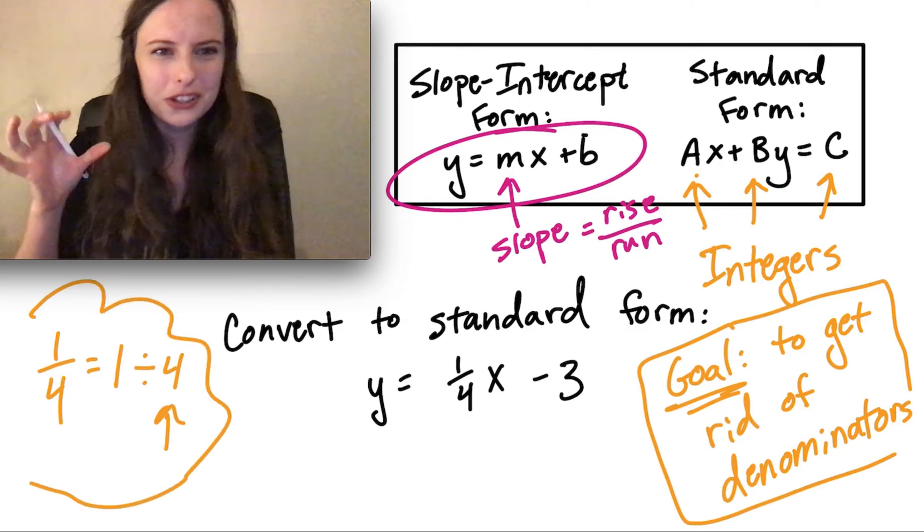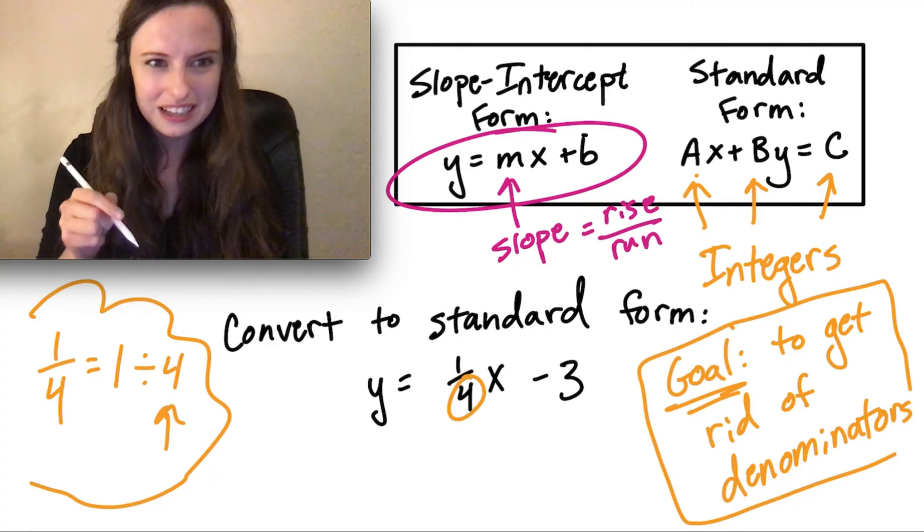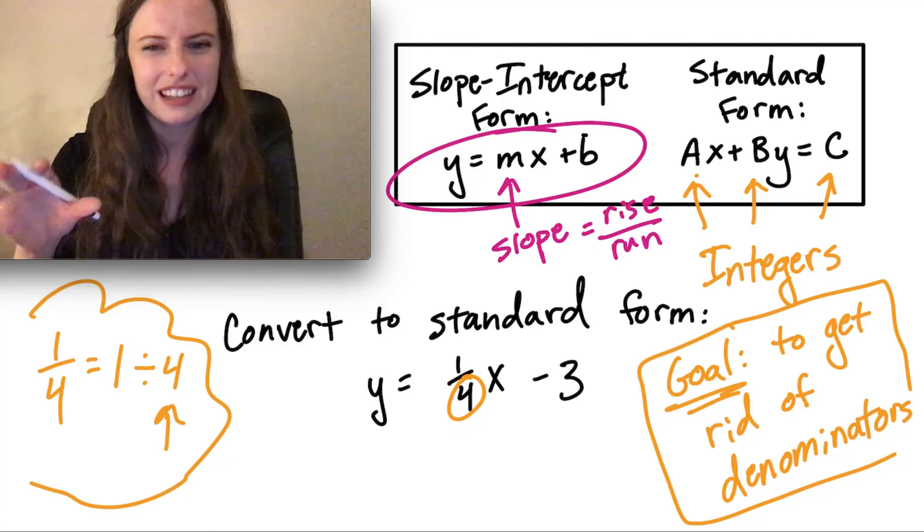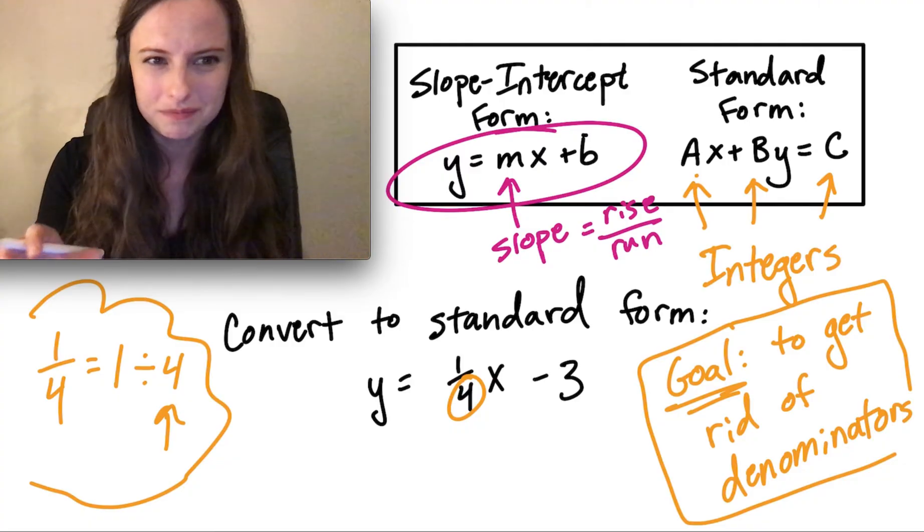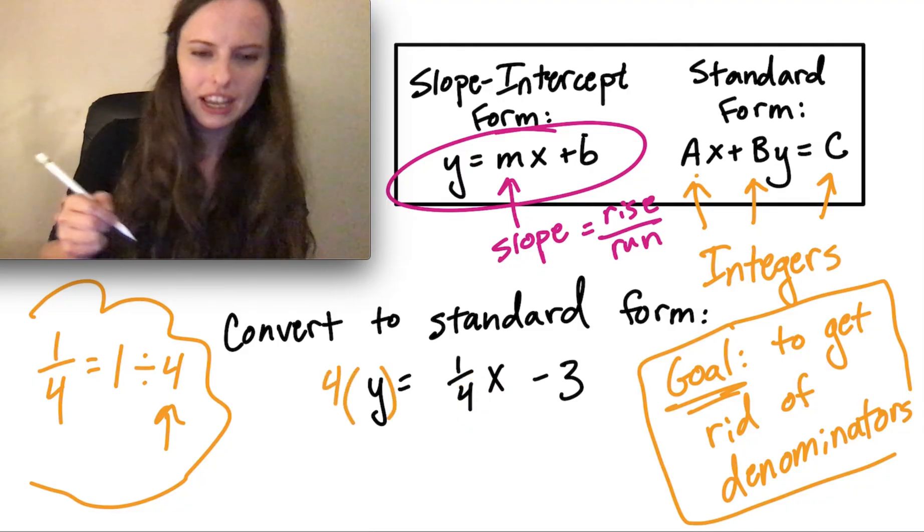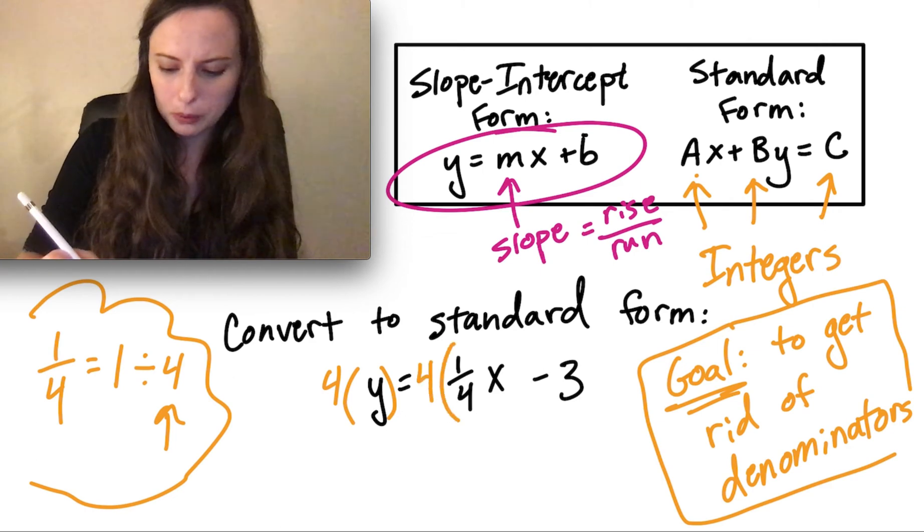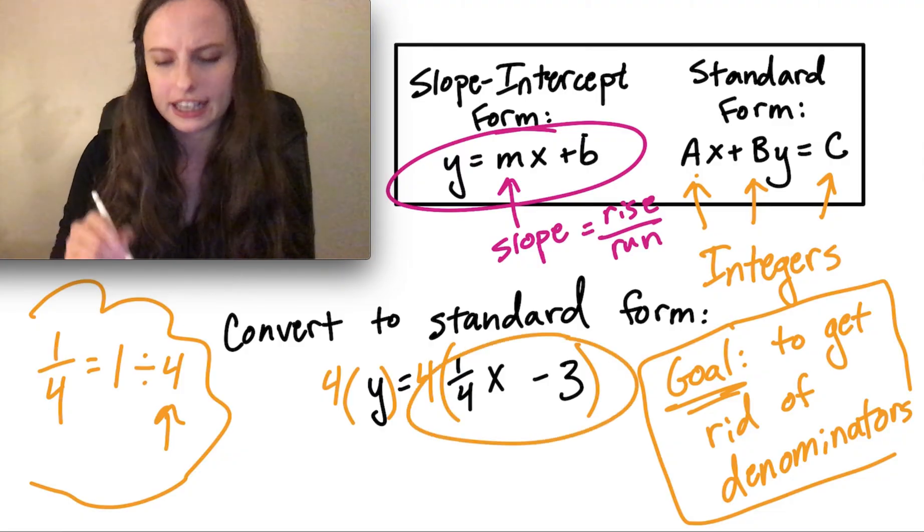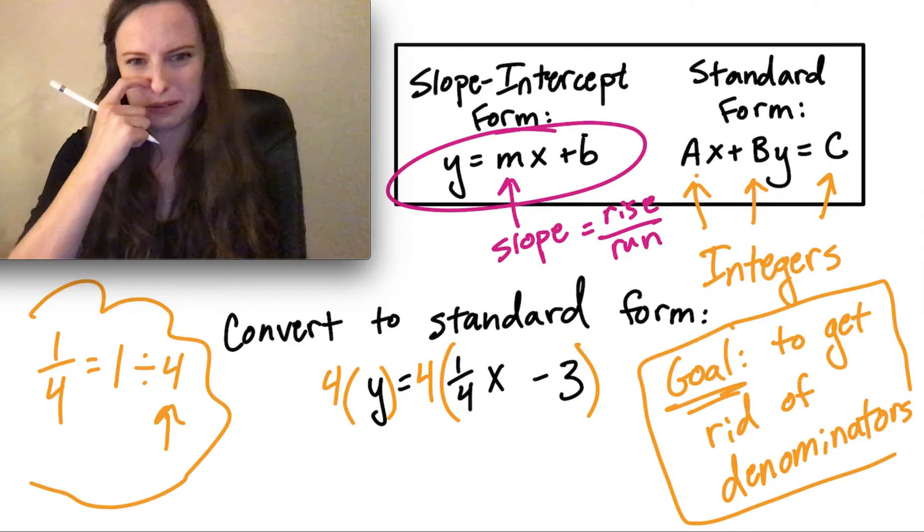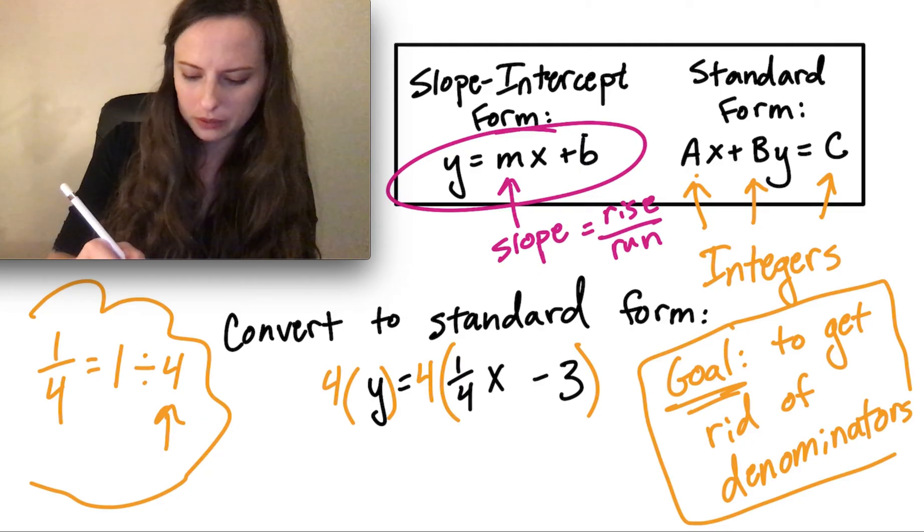So here's your rule for getting rid of denominators. You look at what number is in the denominator, in this case it's 4, and you multiply both sides of the equation by that number. It's that simple. So I'm going to multiply the left-hand side by 4, and I'm going to multiply the right-hand side by 4. Now, I'm going to put it in parentheses to show that I'm multiplying everything on the right-hand side by 4. And that's really important when we start distributing everything out. So we've got 4 times y, which gives us 4y.